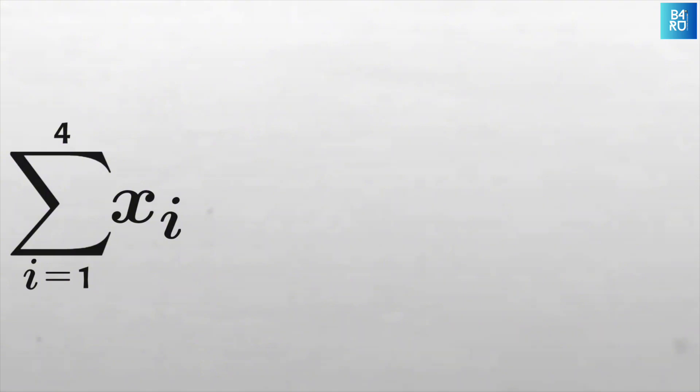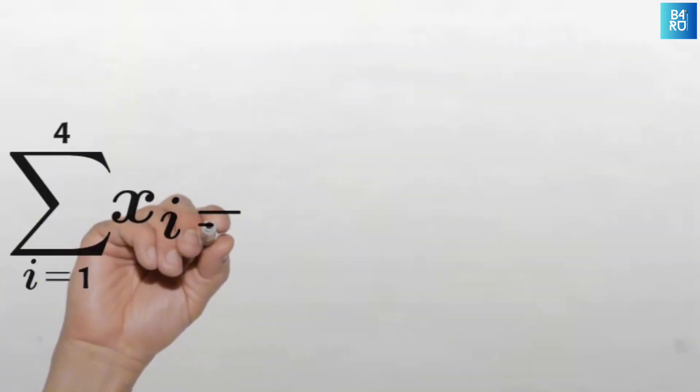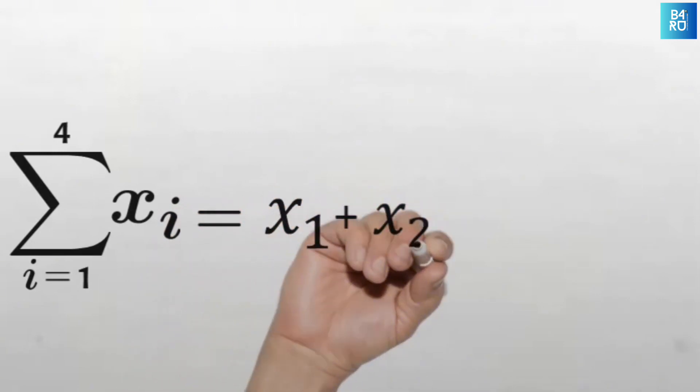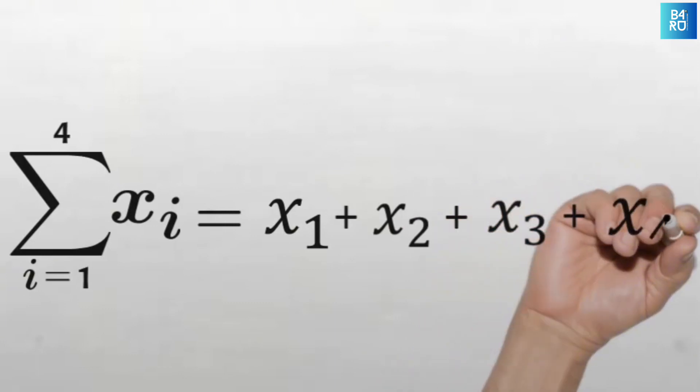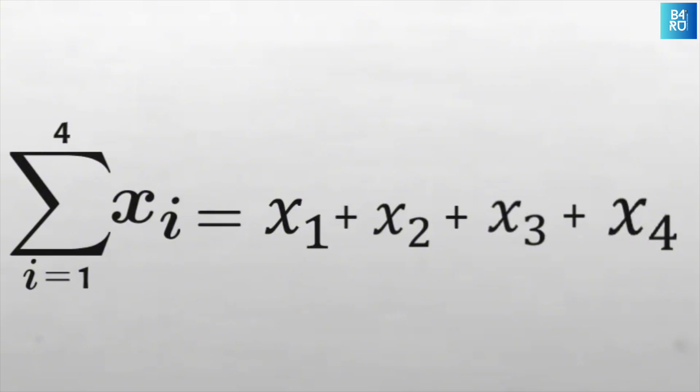So in this our example, let's start with a situation where i equals to 1. So we'll have x sub 1 plus when i equals to 2, we'll have x sub 2. So we'll have plus x sub 3 and then plus x sub 4. At this point, we have reached our ending point as 4. So we had a starting point as 1 and our ending point as 4. So we'll stop here. Easy peasy.